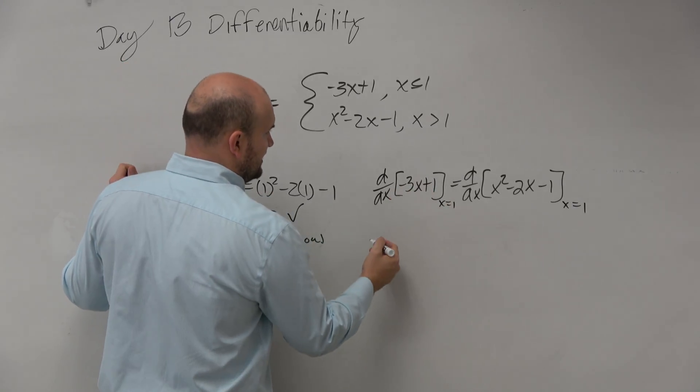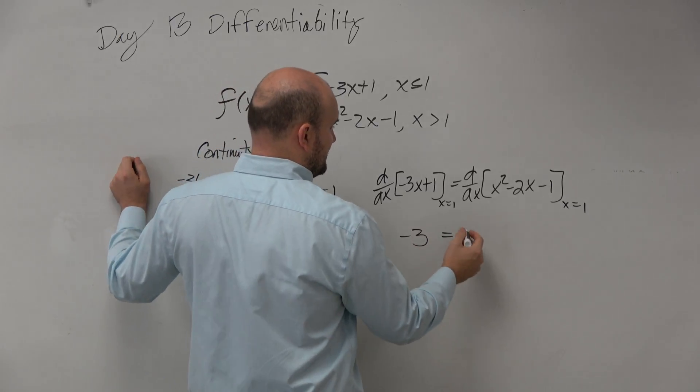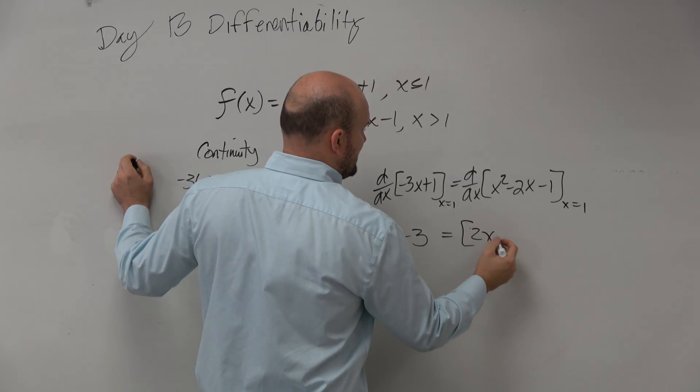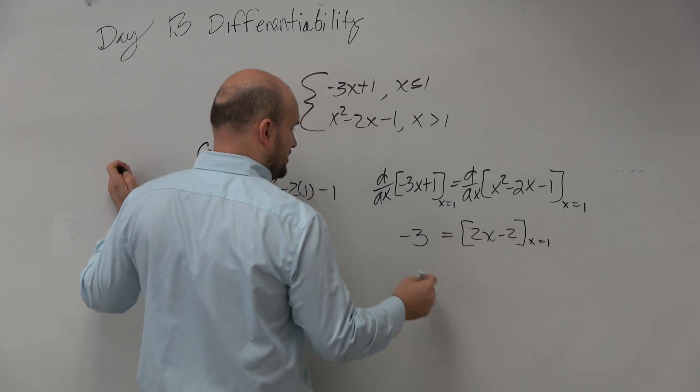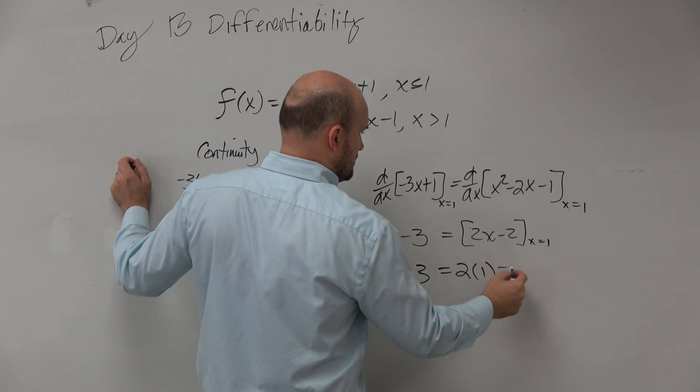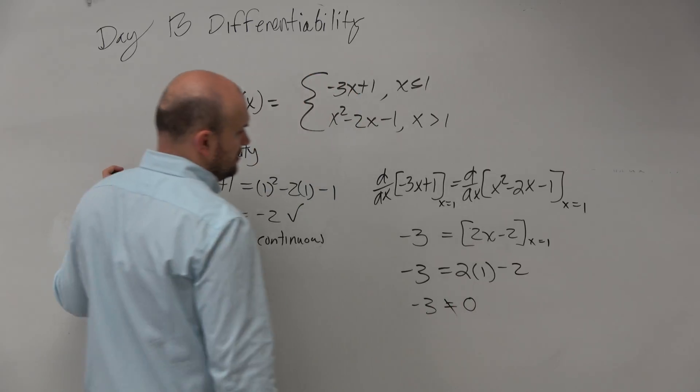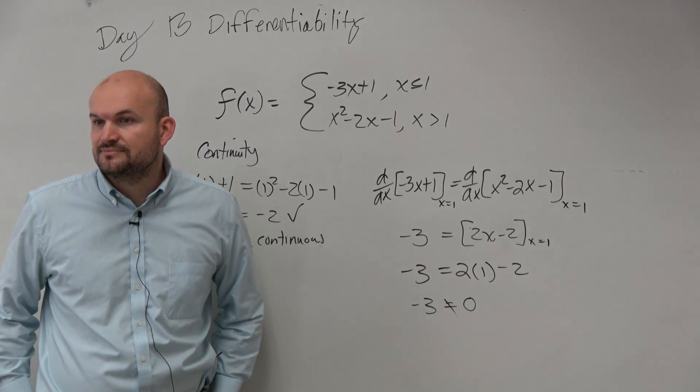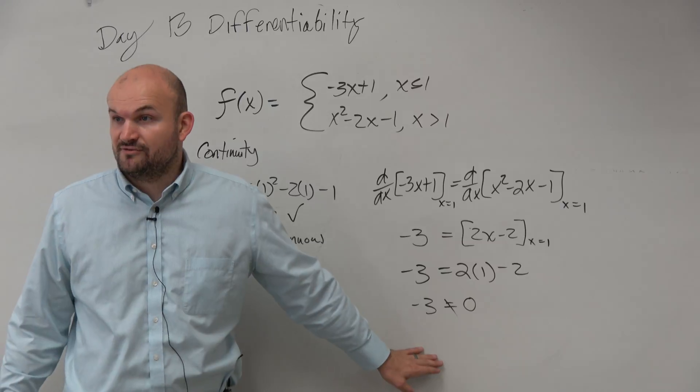So here we take the derivative, which is negative 3. Here we take the derivative, which is 2x minus 2, at x equals 1. Then you go ahead and plug this in: negative 3 equals 2 times 1 minus 2. Negative 3 equals 0, which does not work. So therefore, it is not differentiable at that point. Okay, so it's continuous but it's not differentiable.